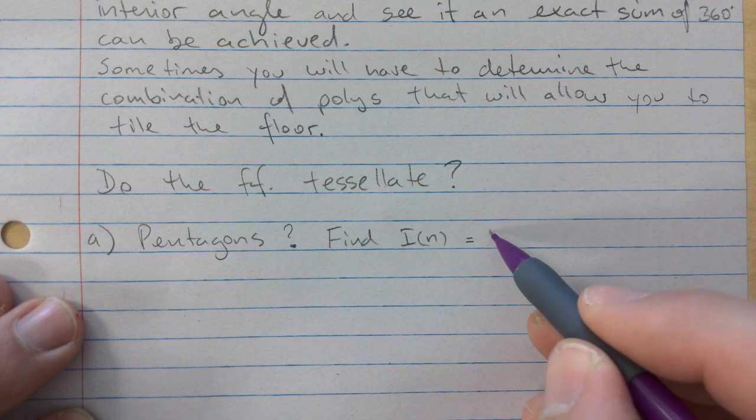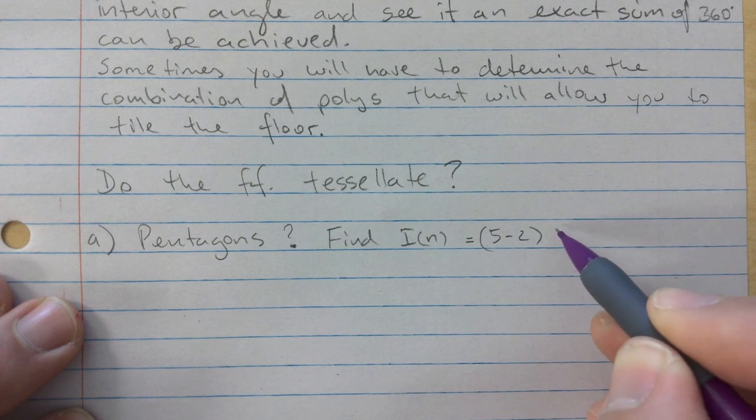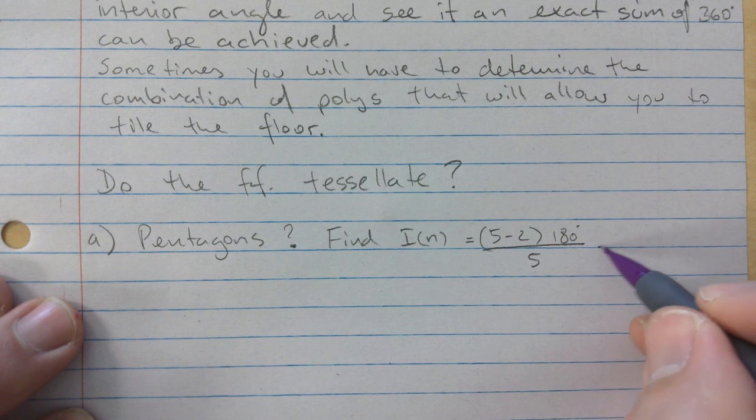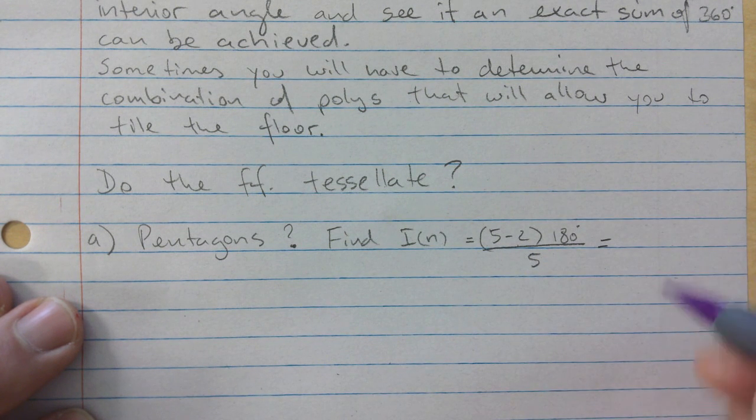So that would be 5 minus 2 times 180 over 5. 3 times 180 divided by 5 gives you 108.